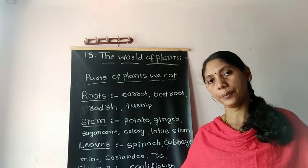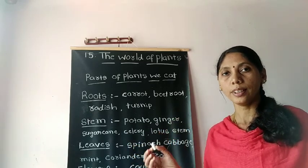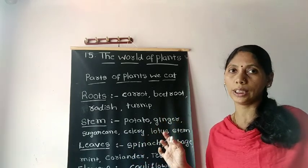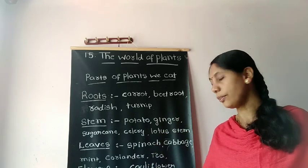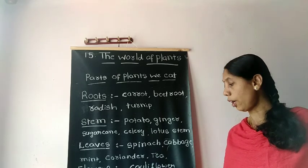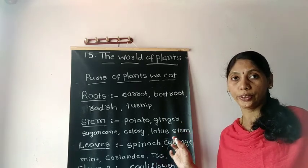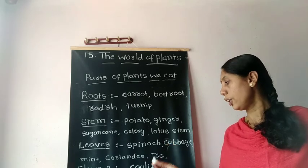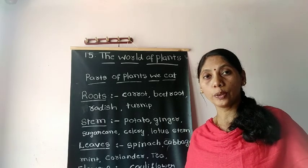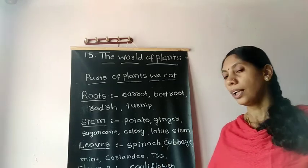Next, flowers. Flowers are a beautiful part of the plant. We use flowers to decorate our home on special occasions. But some flowers we eat as vegetables — like cauliflower. You already eat gobi manchuri, which is made from cauliflower. And broccoli — it is also a flower. We eat it as a vegetable.